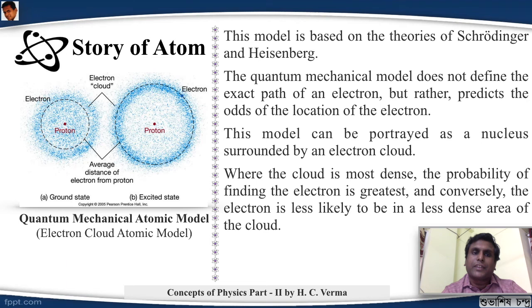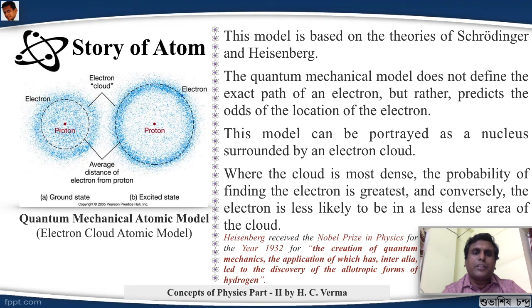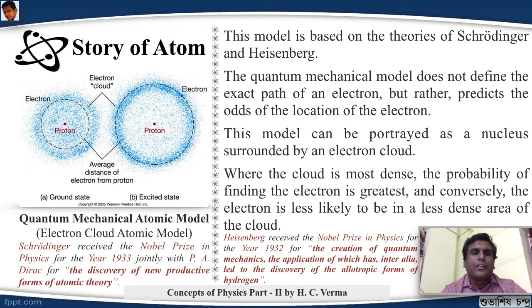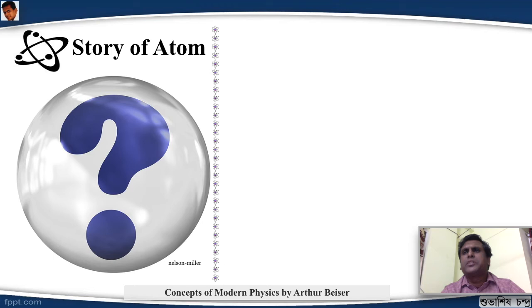Heisenberg received the Nobel Prize in physics for the year 1932 for the creation of quantum mechanics, the application of which has, inter alia, led to the discovery of the allotropic forms of hydrogen. Schrödinger also received the Nobel Prize in physics in 1933 with another genius, Paul Dirac, for the discovery of new productive forms of atomic theory. Now the atom - it seemed that it was complete. It had a positive charge, it had a negative charge. We know where the negative charge was, we know where the positive charge was. But there were few other experiments that were going on with the atom, and they were not consistent with the atomic model. The atomic model was not able to justify these answers.